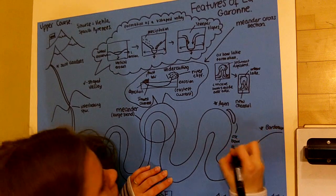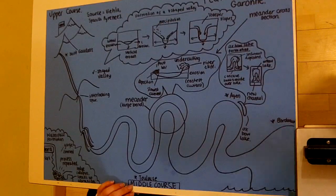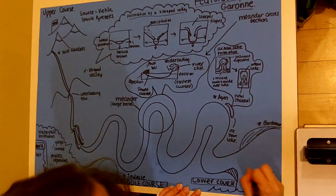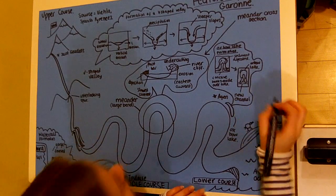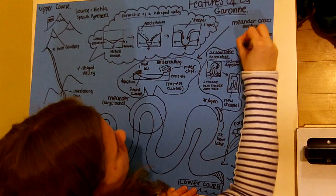Estuaries are a common feature of the lower course of the river. Deposition is a key element, with the creation of salt marshes providing a source of habitat for local wildlife. The estuary is the widest part of the river and flows into an ocean or bay. In this instance, it flows into the Bay of Biscay, a gulf of the Atlantic Ocean.